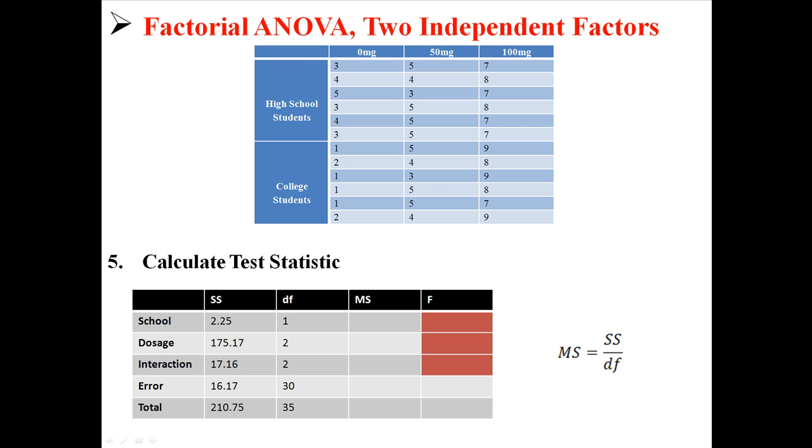So next we need to find a few mean squares. Now that's pretty easy. Remember mean square is always sum of squares divided by degrees of freedom. So we can find the mean square for school, dosage, interaction, and the error. We're just dividing SS by df. That's pretty easy.